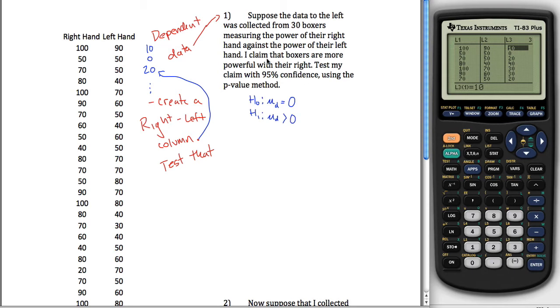My alternative hypothesis in this case would be mu sub d is greater than 0. The reason why is my claim here is that boxers are more powerful with their right. So I'm saying that right is more than left. So when I do right minus left, I should get a positive number. I should get the difference is greater than 0 here.